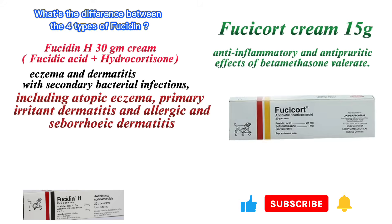Number four: Fucicort cream 15 grams combines the effective antibacterial effects of fusidic acid with the anti-inflammatory and antipyretic effects of betamethasone valerate.